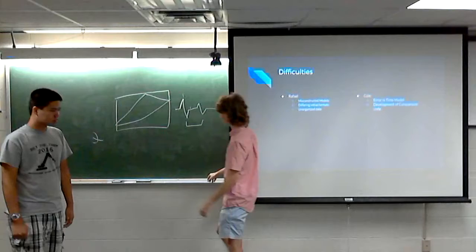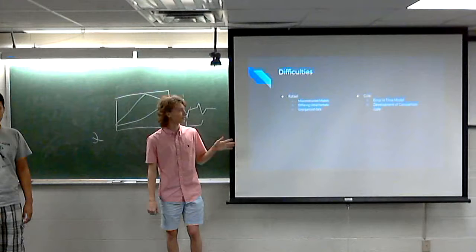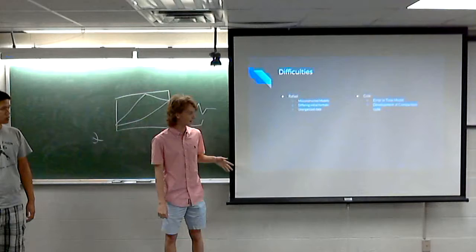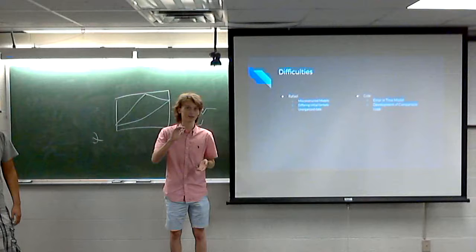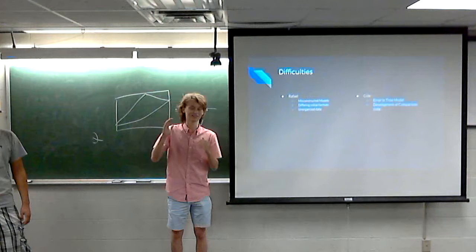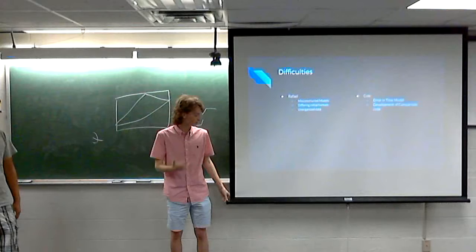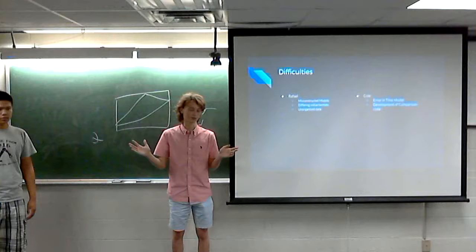My initial time model used the wrong formula, so the model graphs didn't line up as expected. Also, the original version of the comparison code required the same number of data points from the model and observed data, organized by the same channel number and depth, which required an unnecessary amount of time to format. The modern version of the comparison program takes a model input of any length and creates the comparison automatically, so you don't need to spend time formatting.